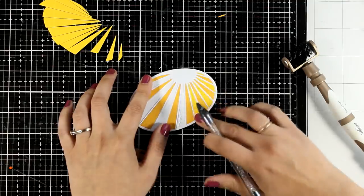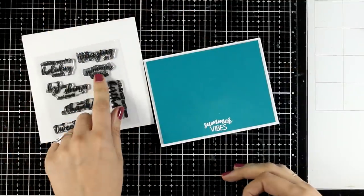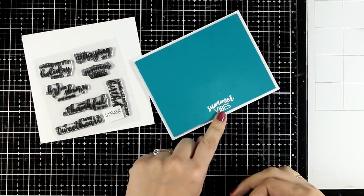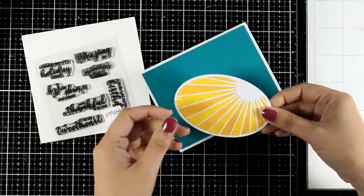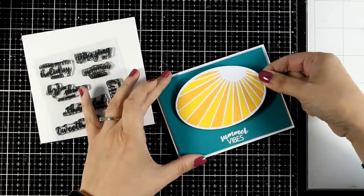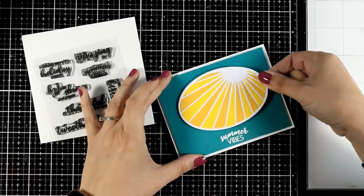I'm going for a summer card and for the sentiment I went with summer vibes. This comes from the tweed sentiments from my collection and I did white emboss that. I'm going to stick on top the oval and you can call this card done.